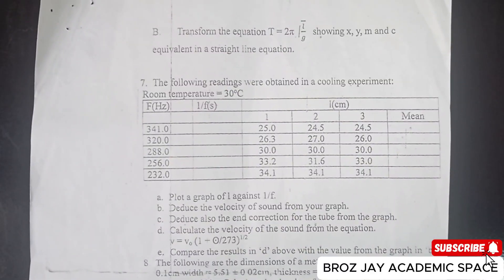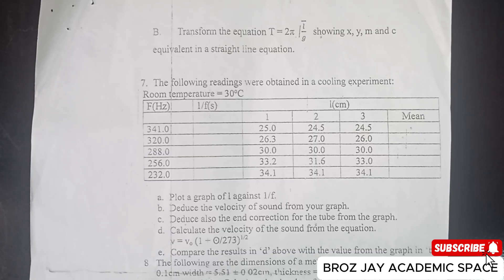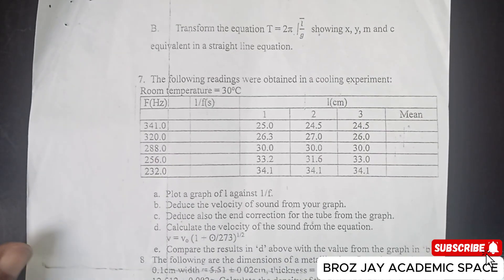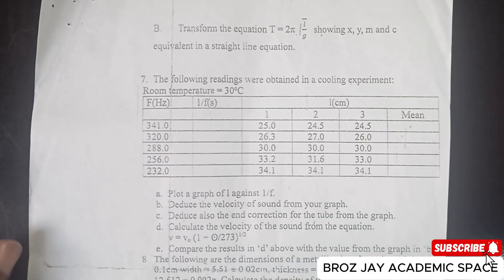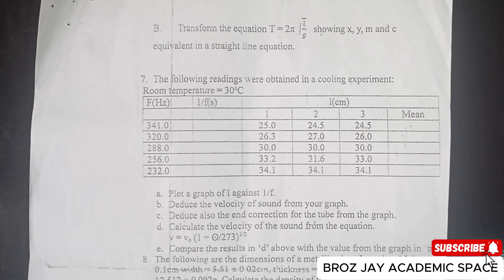Now move to the next graph, number 7. The following readings were obtained in a cooling experiment. Room temperature is 30 degrees Celsius. Fill in the complete table and plot a graph of L (the mean) against 1/F in seconds, given that T equals 1/F in seconds, then deduce the velocity.